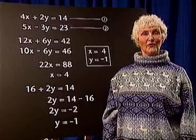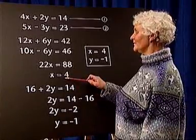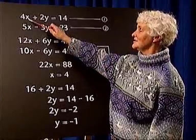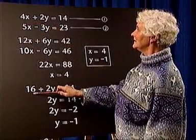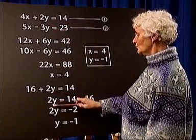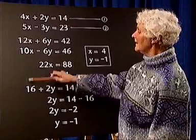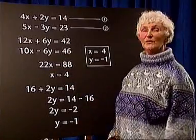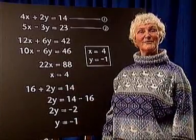In rule 4 we substitute this value of x into the first equation. 4 times 4 is 16, plus 2y is 14. So 2y equals 14 minus 16. We have subtracted 16 from both sides.